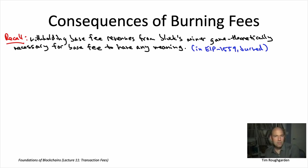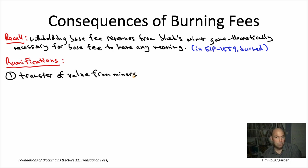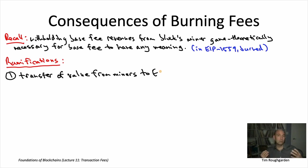While the burning of base fee revenues was introduced for these exact game theoretic reasons, there are interesting consequences of this design choice. By taking coins permanently out of circulation, the indirect beneficiary is in fact all holders of the native currency. One analogy is with the equities world — specifically stock buybacks — which in principle should have the effect of raising the value of all shares remaining in circulation.